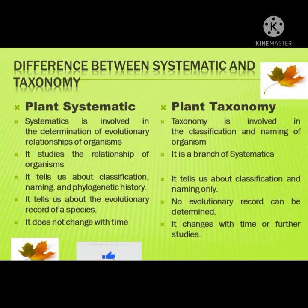In plant systematics, it tells us about classification, naming, and phylogenetic history. While in plant taxonomy, it tells us about classification and naming only. Plant systematics also tells us about the evolutionary record of a species, while in plant taxonomy, no evolutionary record can be determined. Lastly, in plant systematics it does not change with time, while in plant taxonomy it changes with time or further studies.